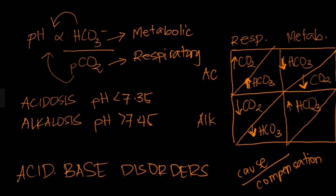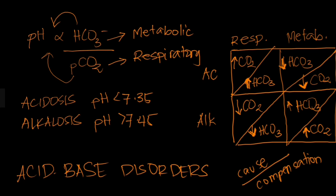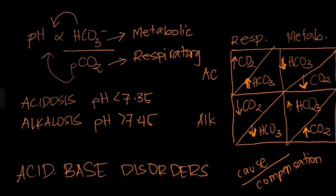Let's go to metabolic alkalosis. The cause here is bicarbonate, so what compensates is CO2. Since this is alkalosis, the pH is increased. To decrease the pH back to normal, carbon dioxide has to increase — remember, CO2 and pH are inversely proportional. That's it for acid-base disorders. If you found this video helpful, please like, leave a comment, or subscribe to this channel. Thank you.